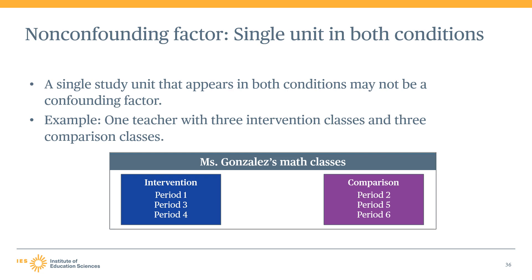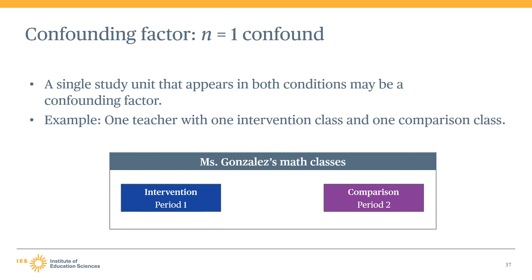Ms. Gonzalez taught three class periods in each condition. What if there were only two classes and she taught only one class in each condition? In that case, there would be a confounding factor — not because of Ms. Gonzalez, but because there is a single class period in each condition, representing an N equals one confounding factor. We would not be able to separate the effect of the intervention from the effect of being in that particular class period.